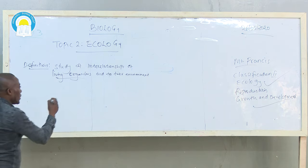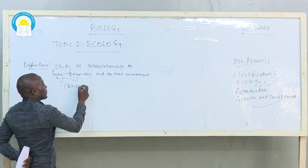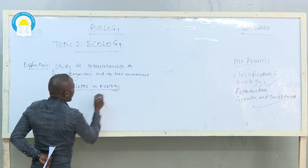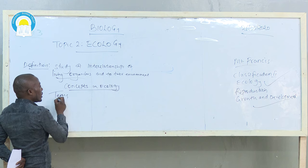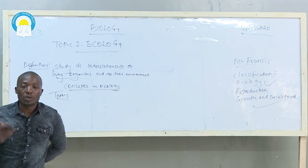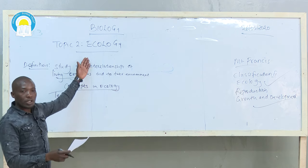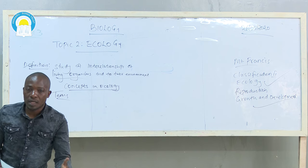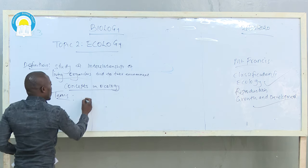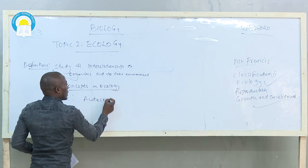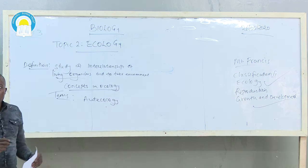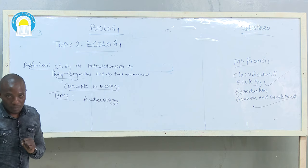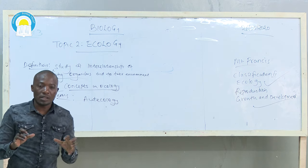Then, after understanding the definition, we go to concepts in ecology — we are talking about terms. Some of the terms we are going to come across when we discuss this topic. The first term is autecology. When we talk about autecology, we mean the study of a single species in an ecosystem.